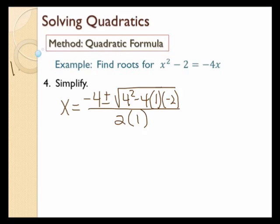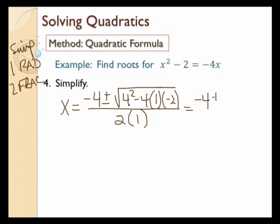My first step in simplifying is to simplify the radical. So to recap, I have x equals negative 4 plus or minus the square root of 4 squared minus 4 times 1 times negative 2, all over 2 times 1. I'm going to simplify the radical first and then the fraction.